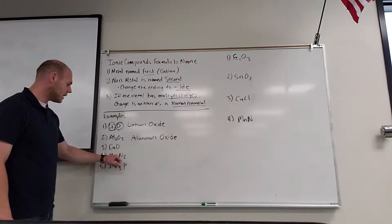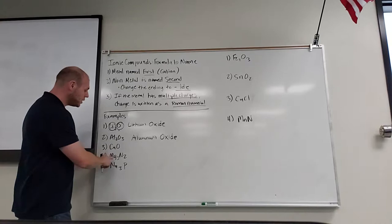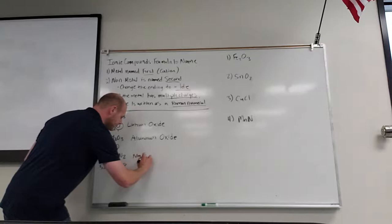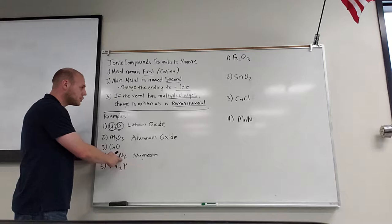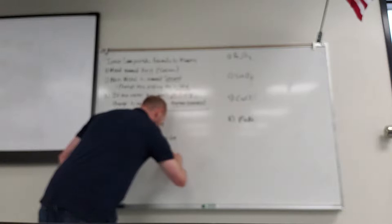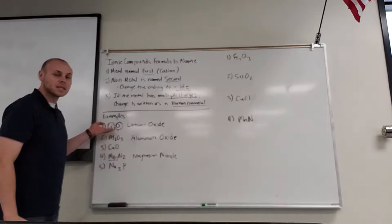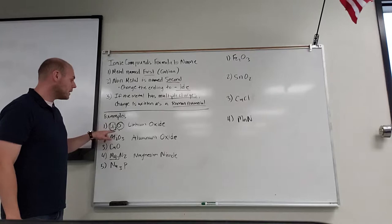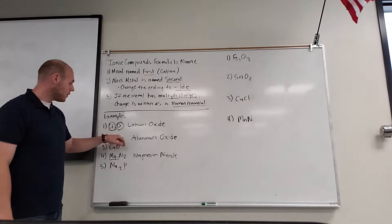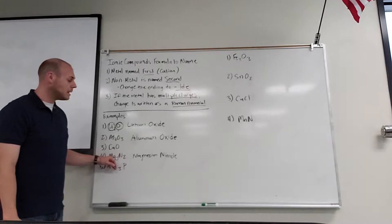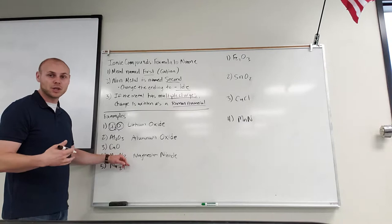If we look at MgN₂ — the cation is magnesium, and N as we know is nitrogen. Nitrogen as the anion, we change the ending to "-ide", it becomes nitride. Coming up with these names is very simple because all you have to do is look at the symbol, match it with the symbol on the periodic table, and write the name. Li is lithium, O becomes oxide. Al is aluminum, O becomes oxide — aluminum oxide. Mg is magnesium, N is nitrogen, change the ending to "-ide" — nitride.